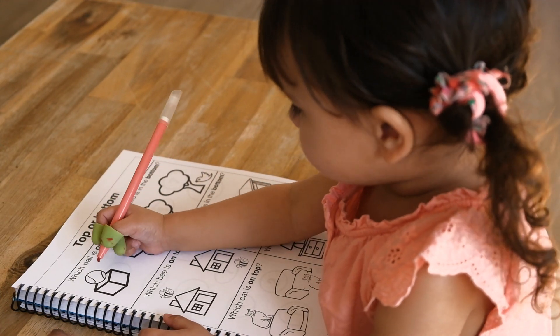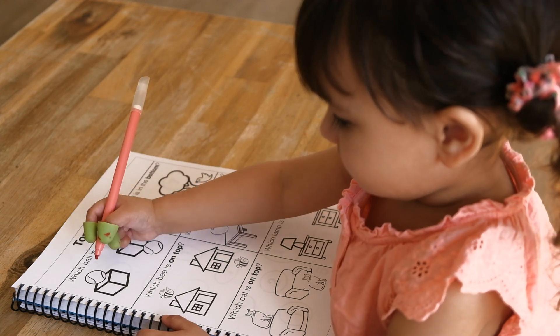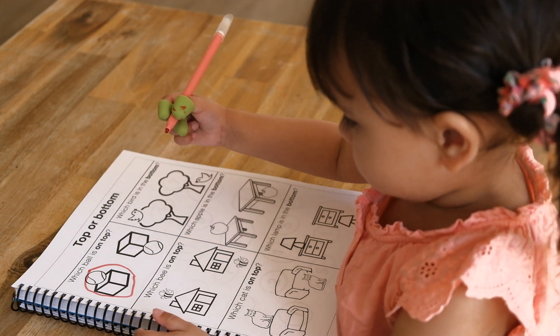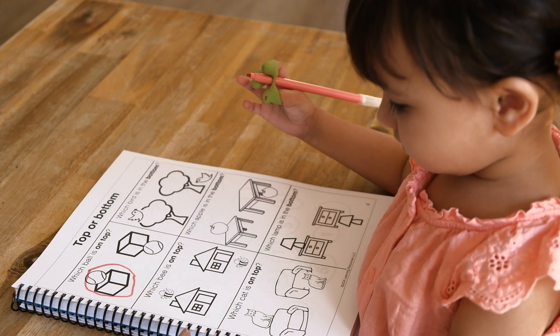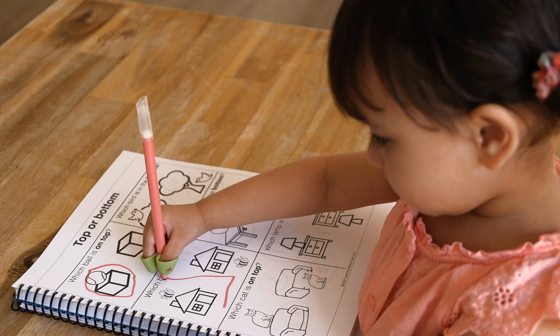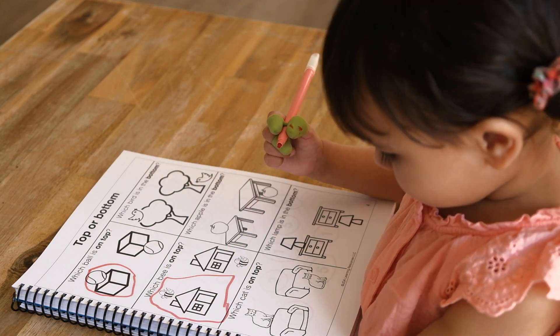Which ball is on top of the box? That's right. Can you circle that? Which bay is on top of the house? That's right.